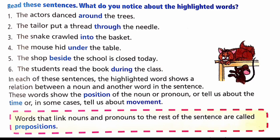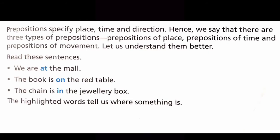The words that link nouns and pronouns to the rest of the sentence are called prepositions. Prepositions specify place, time, and direction. Hence, we say that there are three types of prepositions: prepositions of place, prepositions of time, and prepositions of movement.